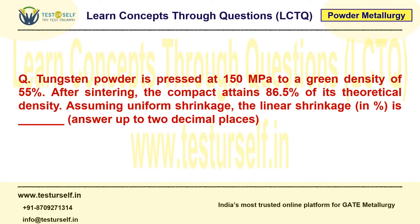We have been given the green density, that is 55%, and the compact attains 86.5% of its theoretical density — meaning we have the sintered density. And we have to find the linear shrinkage in percentage.